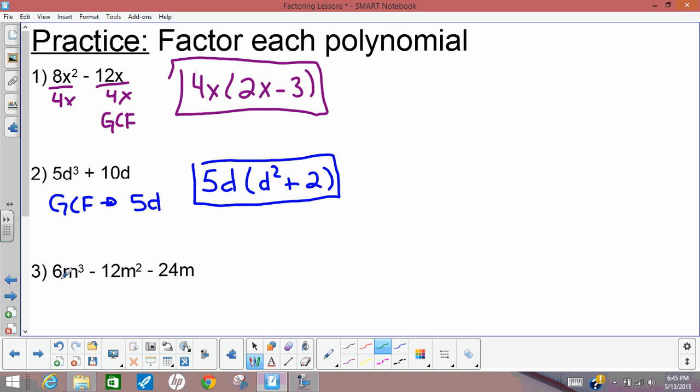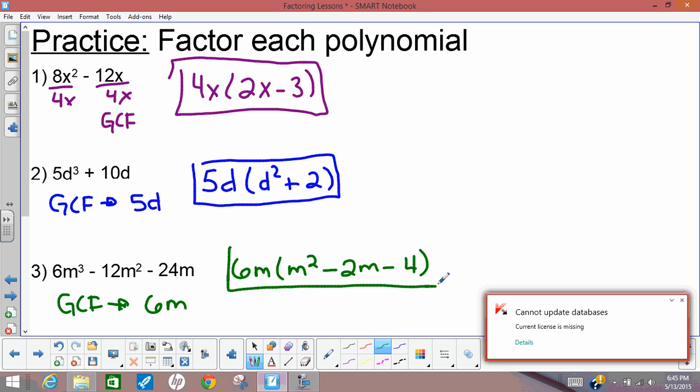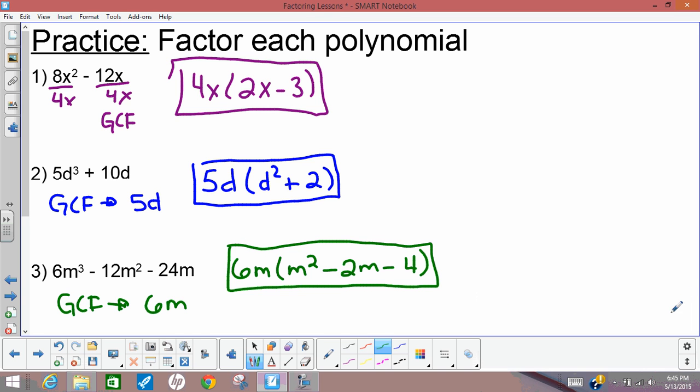And the last one, my GCF is 6 for my number and m for my variable portion. So the factorization is 6m times—6m cubed divided by 6m is just m squared—minus 2m minus 4. Sorry about that.